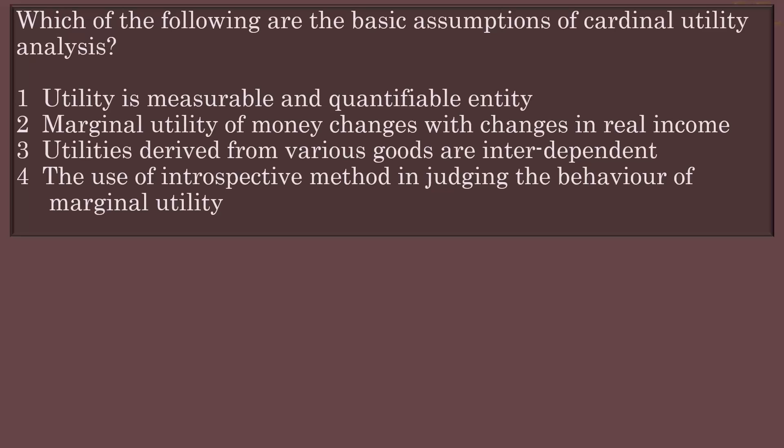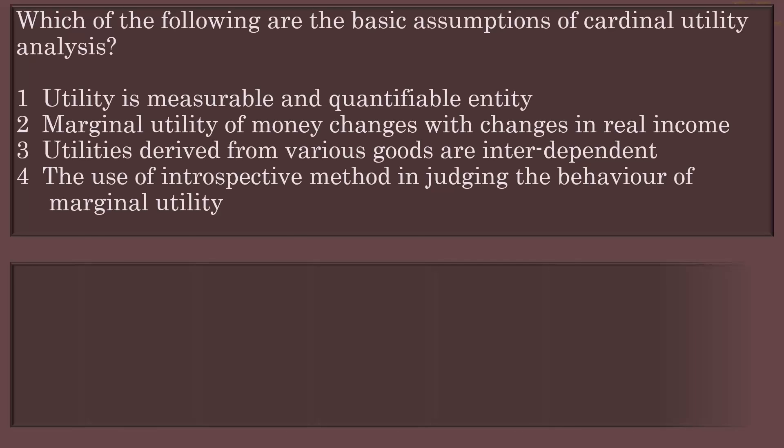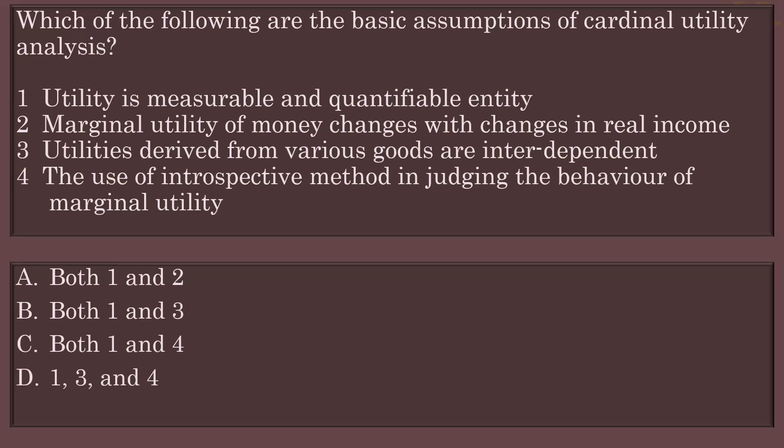Which of the following are the basic assumptions of cardinal utility analysis? Statement 1: Utility is measurable and quantifiable entity. Statement 2: Marginal utility of money changes with changes in real income. Statement 3: Utilities derived from various goods are interdependent. Statement 4: The use of introspective method in judging the behavior of marginal utility. Options: Both 1 and 2, Both 1 and 3, Both 1 and 4, 1, 3 and 4.